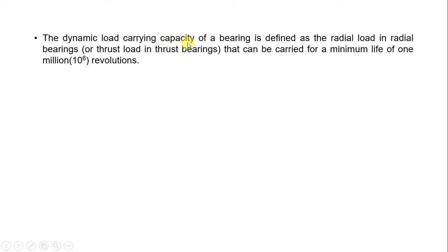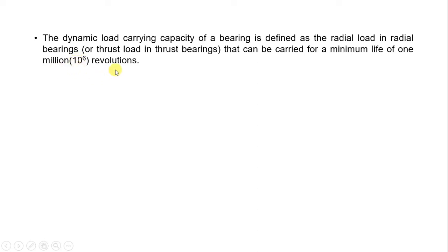The dynamic load carrying capacity of a bearing is defined as the radial load in radial bearings, or the thrust load in thrust bearings, that can be carried for a minimum life of ten million revolutions. The bearing's rated life is defined as the number of revolutions that 90% of a group of bearings complete before the evidence of failure. So, the dynamic load carrying capacity is the load — radial in radial bearings, thrust in thrust bearings — that a bearing can carry for a minimum life of 10 million revolutions.